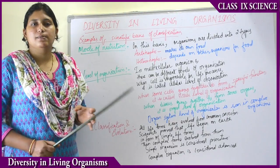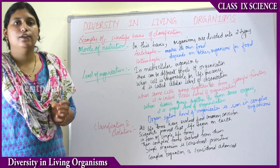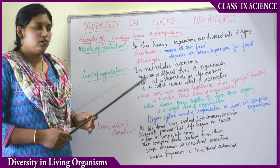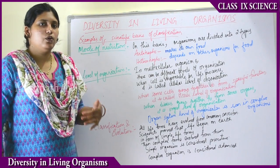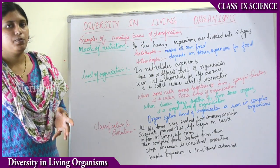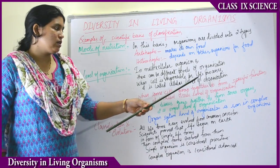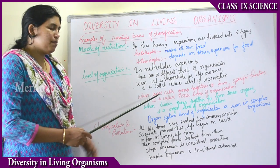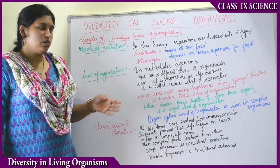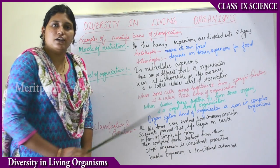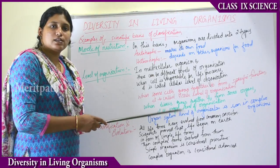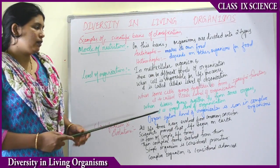Moving on to the level of organization: the body is made up of cells, considered as the basic structural and functional unit of any organism. In multicellular organisms there are different levels of organization. Cells develop into tissues, and tissues develop into organs that carry out life processes like respiration and excretion. When a cell is responsible for all life processes, it is the cellular level of organization. When cells group together to perform specific functions, they form tissues — this is the tissue level of organization.